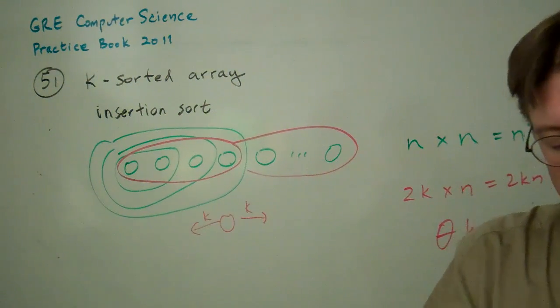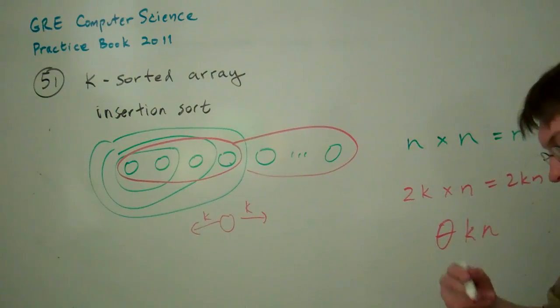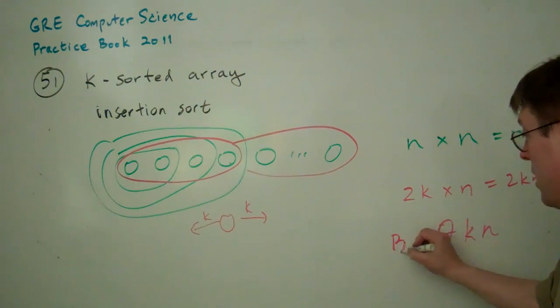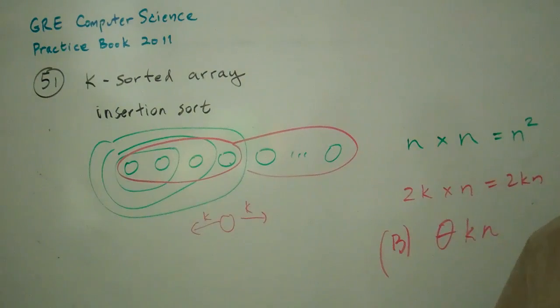So that's why the answer to question 51 is b, theta of kn.